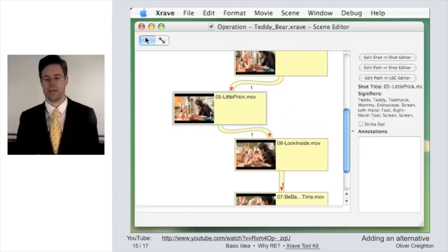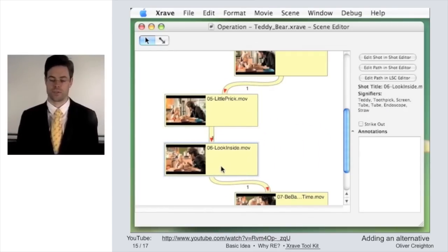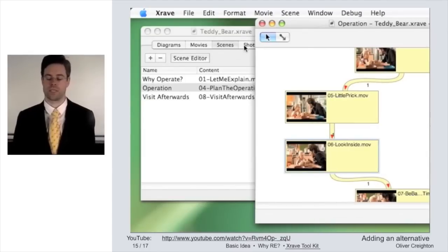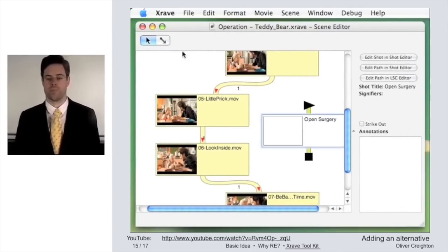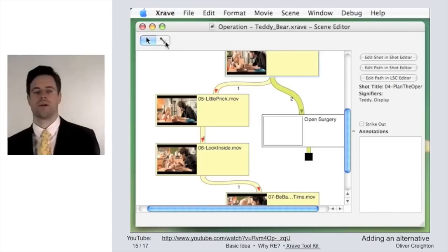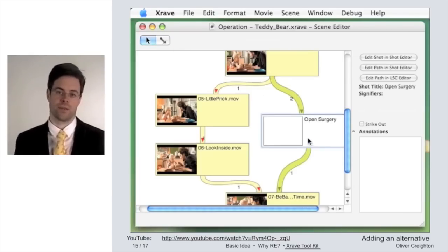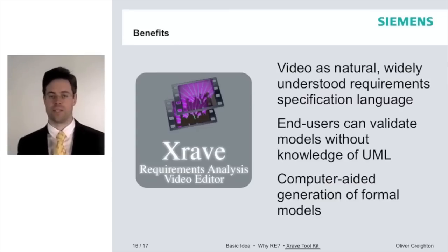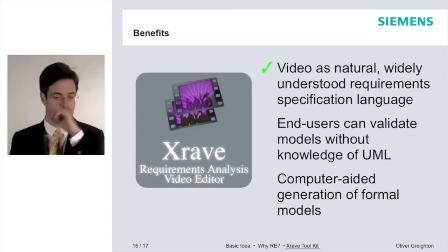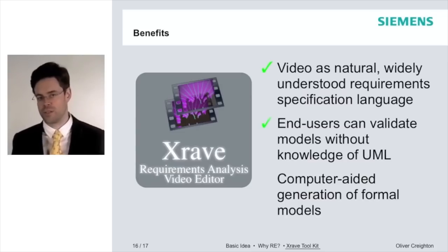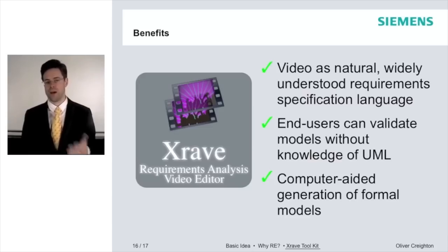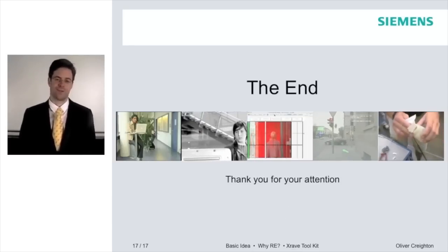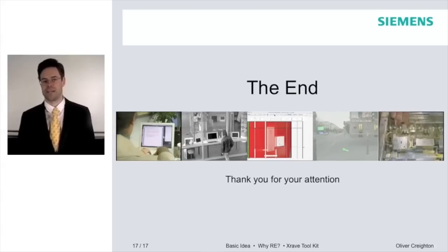For example, if we have a scenario of minimally invasive surgery, but the alternative of open surgery is missing, we can just add another clip right here, hook it up in our graph, and say this is the alternative way — something that can also happen in our model. So now we have seen how we enable the use of video as a complementary, natural, and widely understood requirement specification language. It allows end users to validate and contribute to models without needing to learn your notations. We also define a technique for computer-aided generation of formal models from the annotated video. I'd now like to invite you to go over to the virtual world, where you can see how I look as an avatar.